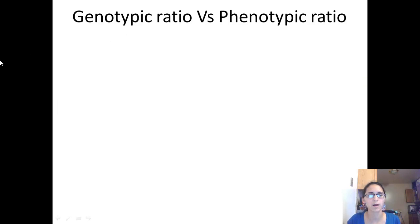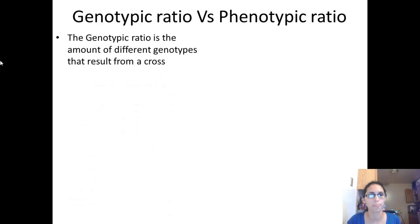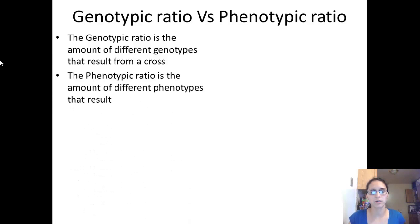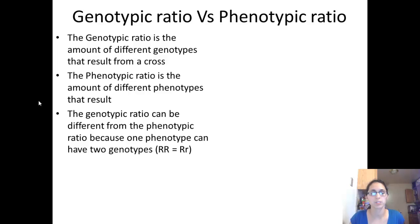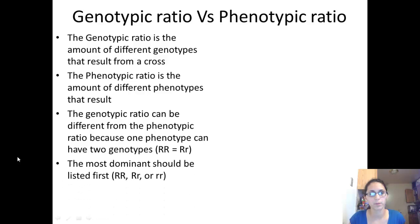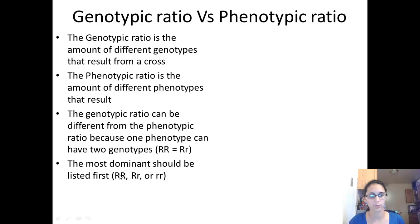Now we'll talk about the genotypic ratio and phenotypic ratio. The genotypic ratio is the number of different genotypes that result from a cross. The phenotypic ratio is the number of different phenotypes that result from a cross. The genotypic ratio can be different from the phenotypic ratio because one phenotype can result from two different genotypes. For example, in the ladybug cross, both the homozygous dominant (RR) and heterozygous (Rr) genotypes produce a red phenotype, even though Rr has a recessive allele.